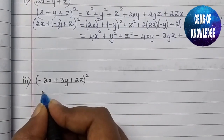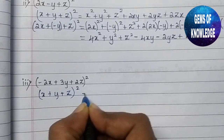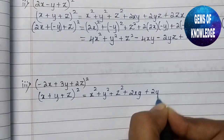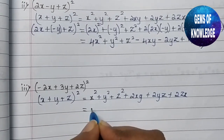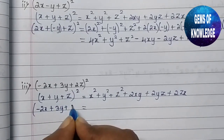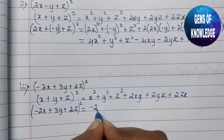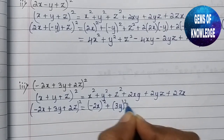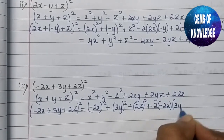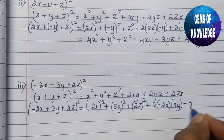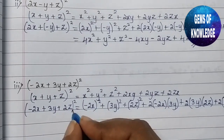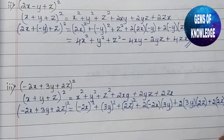The next question is also of the same type using (x + y + z)² = x² + y² + z² + 2xy + 2yz + 2zx. Here x = −2x, y = 3y, z = 2z. Substituting: (−2x)² + (3y)² + (2z)² + 2(−2x)(3y) + 2(3y)(2z) + 2(2z)(−2x).